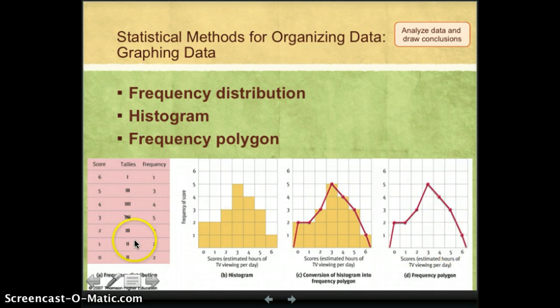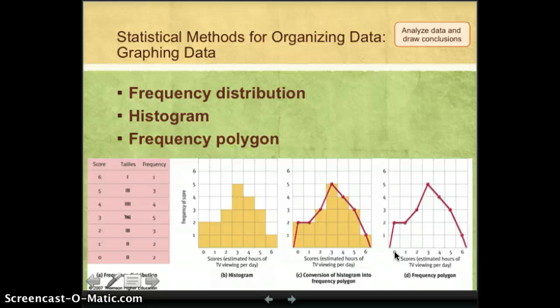It's the same data from this frequency distribution, only this time we've put a dot for where each data point is, and we've connected them with lines. If you organize the data visually, you can graph the data in one of these three ways, and the way that we see most frequently used in descriptive statistics in psychology is the line graph or frequency polygon.